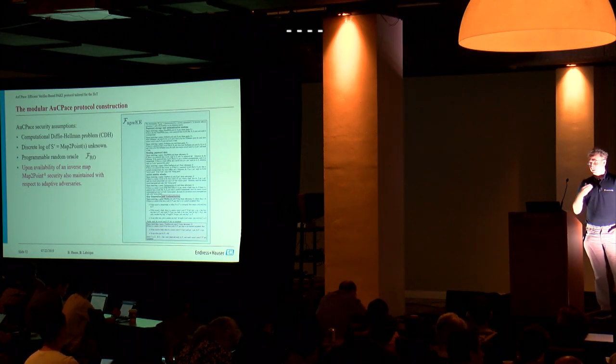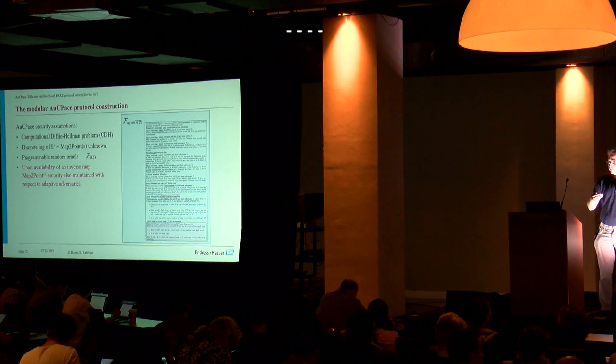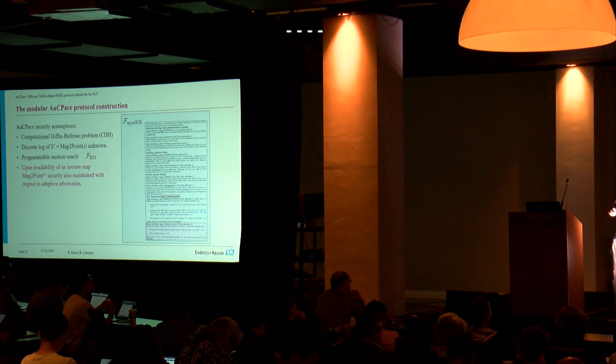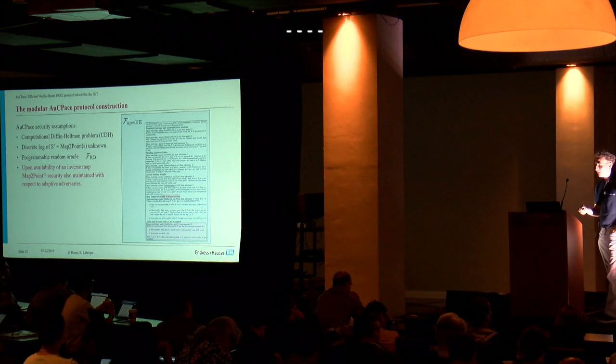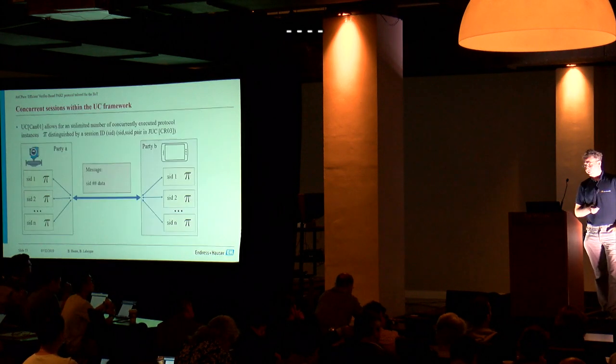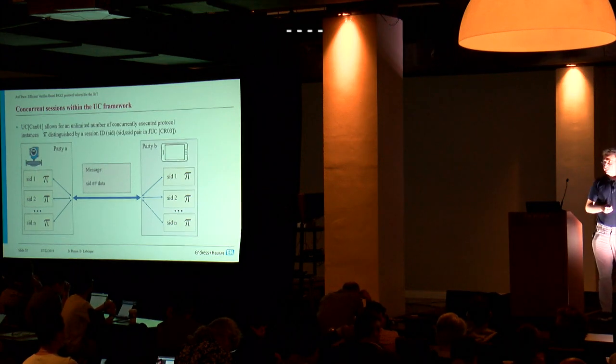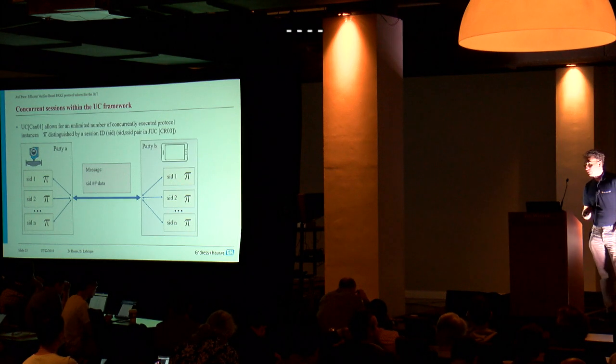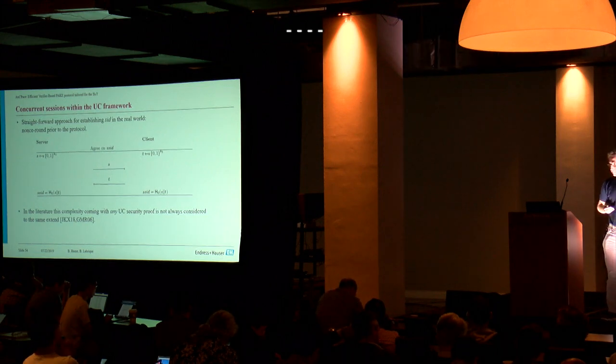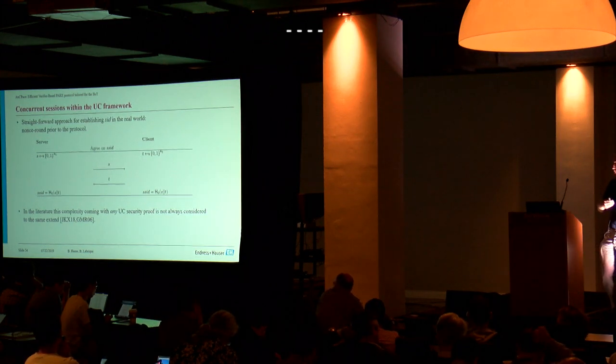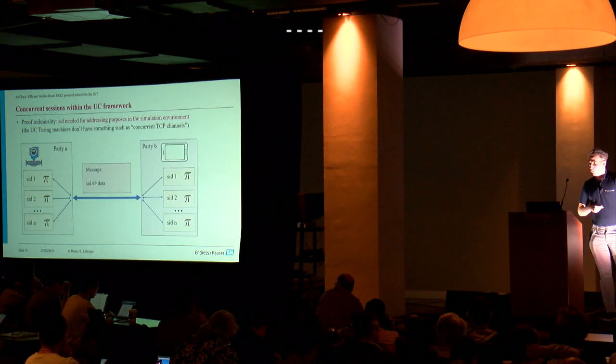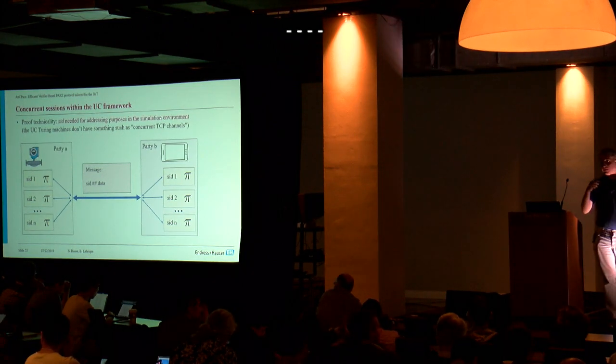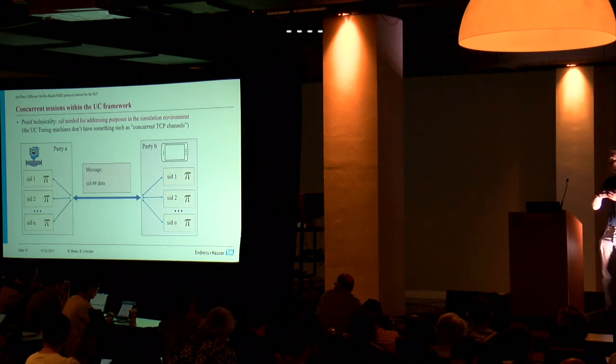If an inverse map of the map-to-point operation is available, the security is also maintained with respect to adaptive adversaries which is something specific or uncommon for Diffie-Hellman style protocols in the UC framework which typically are only secure with respect to static adversaries. There's one specific feature when using the UC framework. It's secure if you're having an unlimited number of concurrent sessions but this comes at the complexity that you need to define a session ID.